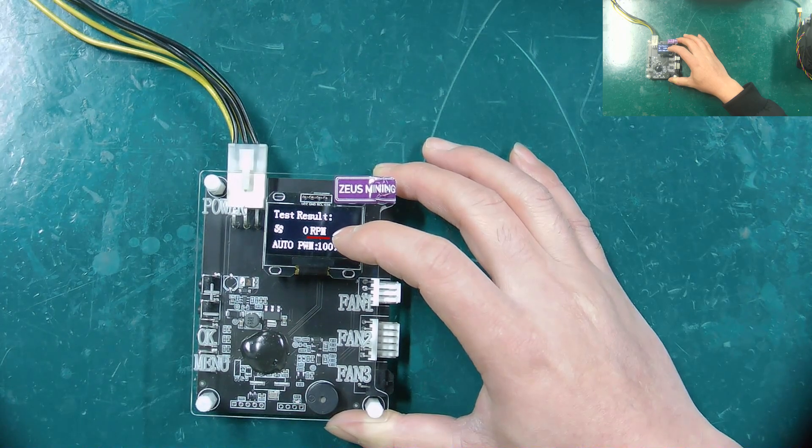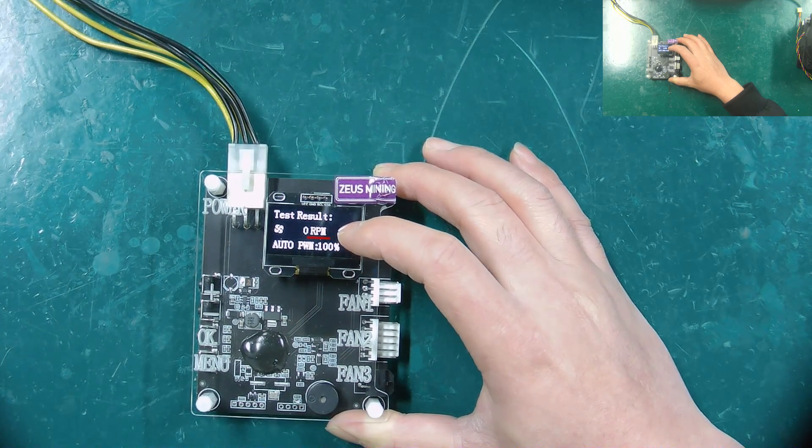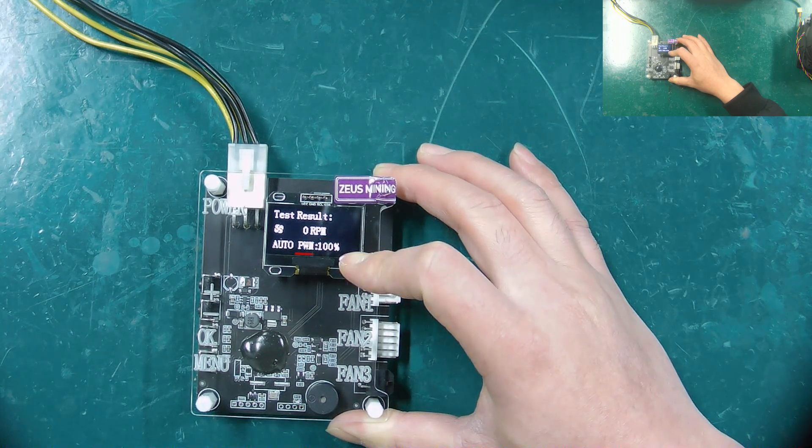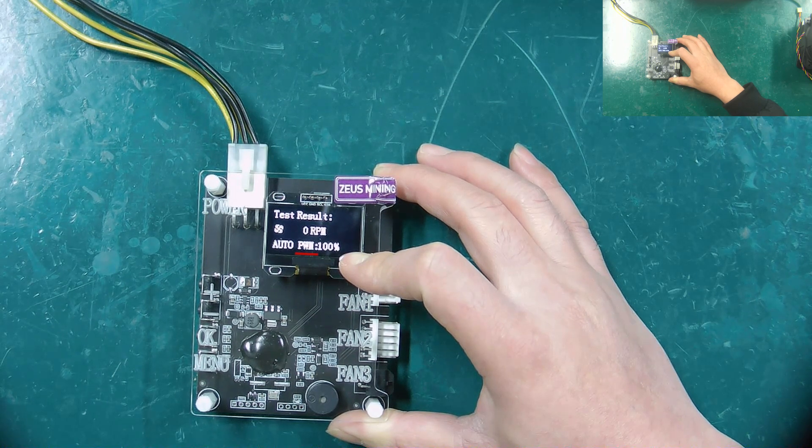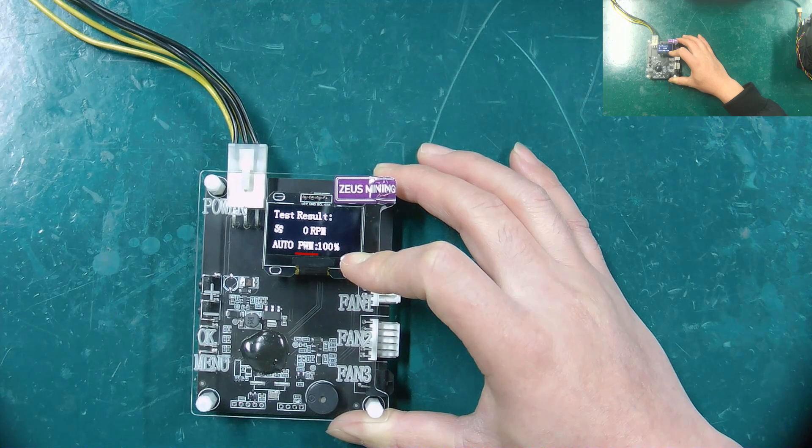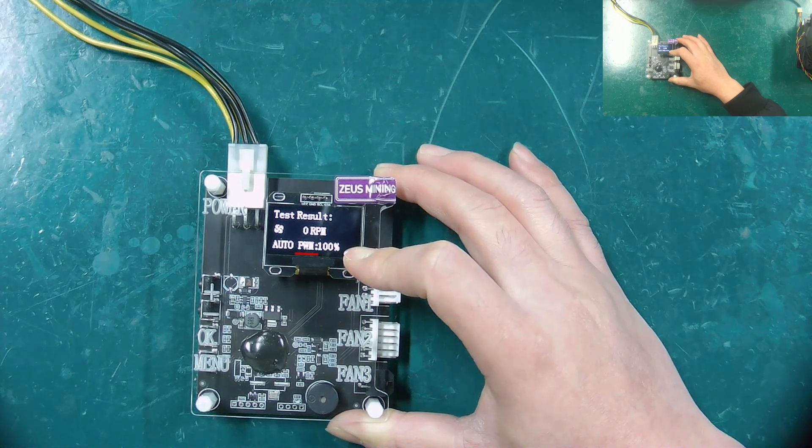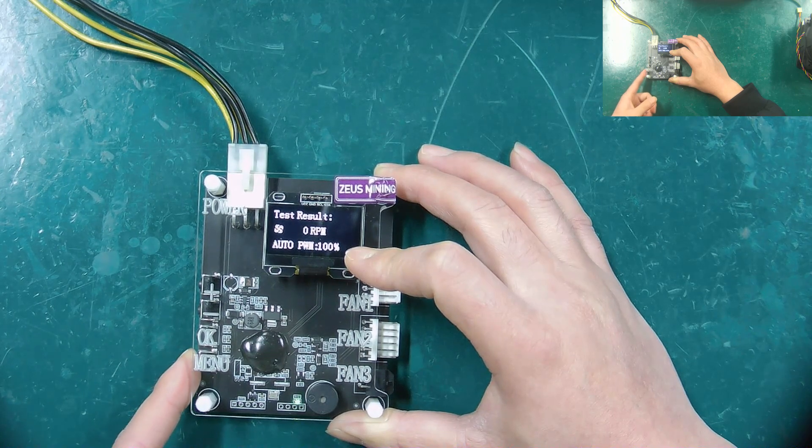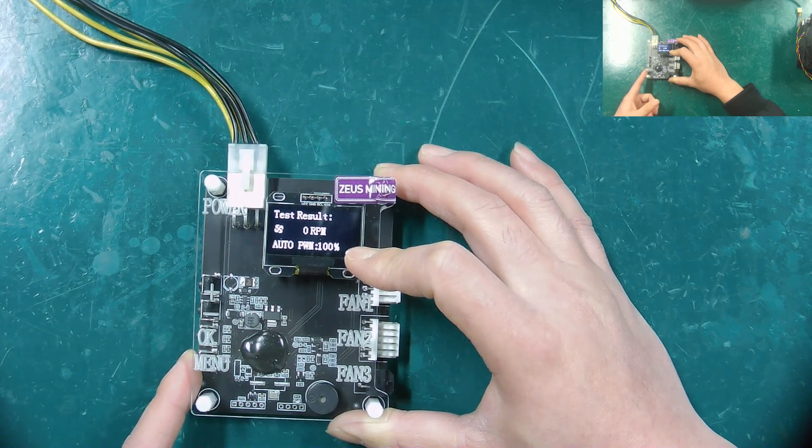RPM represents the number of times the fan rotates per minute, which is the real-time speed of the tested fan. PWM stands for Pulse Width Modulation. Setting this parameter can adjust the fan speed, generally set to 100% full speed. Pressing the menu button, we will then introduce more features in detail.